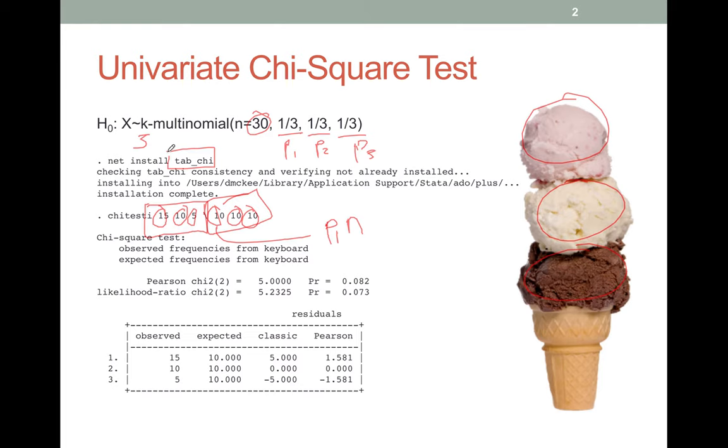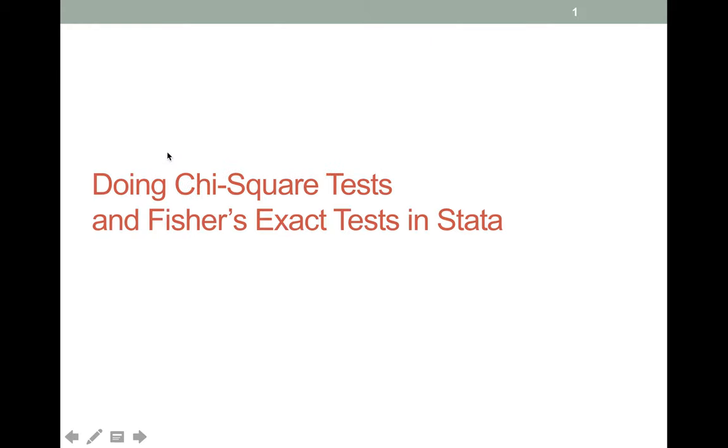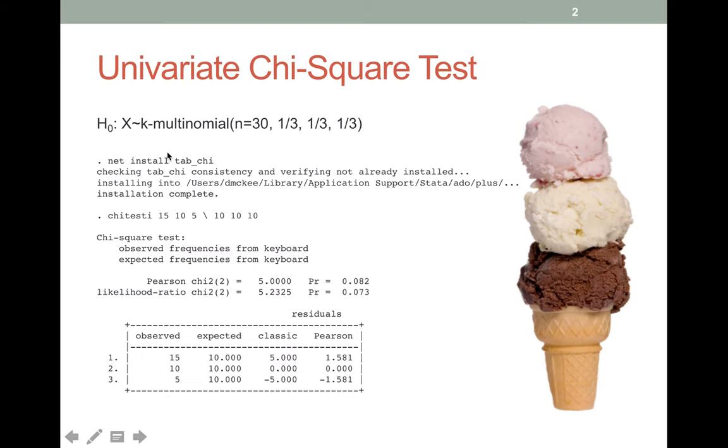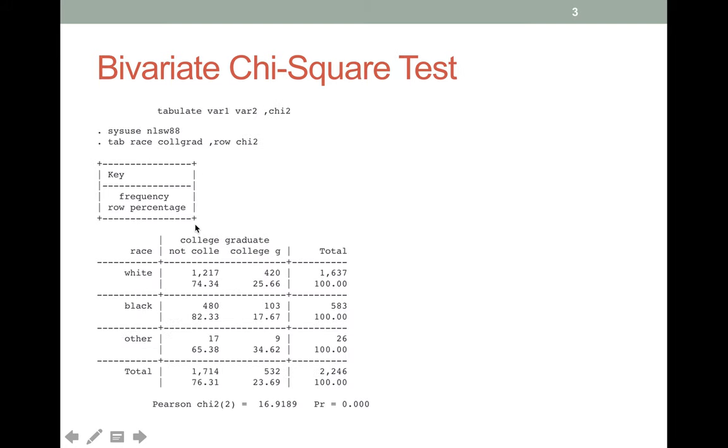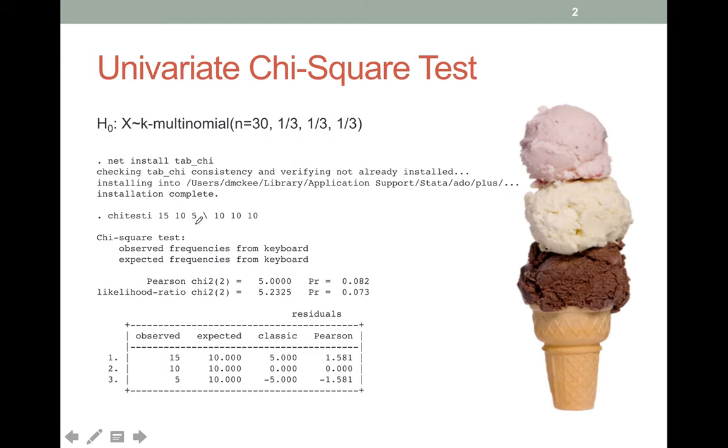Chi test i stands for chi test interactive, which is what you use if you just have the numbers and you just want to type them right in at the command line. What you do is you give it your counts, that's where we have our 15, 10, and 5, those are our observed counts, and then 10, 10, 10, these are our expected.